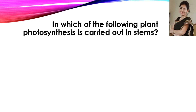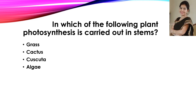Now in which of the following plants is photosynthesis carried out in the stems? The correct answer is cactus, because cactus is a xerophytic plant — a desert plant. The leaves are reduced to spines, so the stem becomes green to carry out photosynthesis, and the leaves are minimized to spines to reduce the loss of water through transpiration.